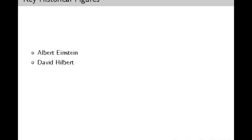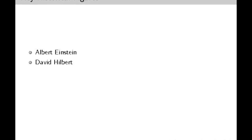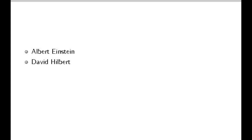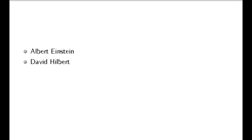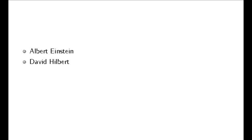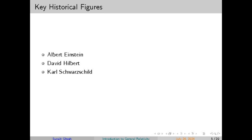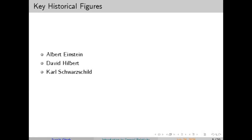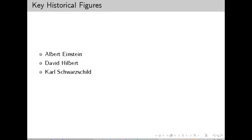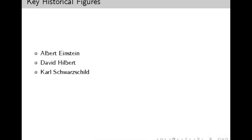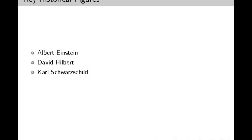Efforts to reconcile these two pillars of physics have led to several interesting theories. String theory suggests that the fundamental building blocks of the universe are not point-like particles but tiny, vibrating strings. Loop quantum gravity attempts to quantize space-time itself. Both theories are still in development, and experimental evidence is needed to determine their validity. General relativity also struggles to explain dark matter, which makes up about 27% of the universe, and dark energy, which accounts for roughly 68% — both mysterious components whose true nature remains one of the biggest questions in modern physics.